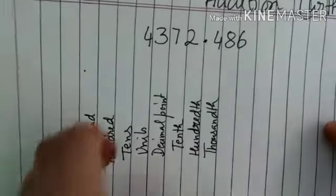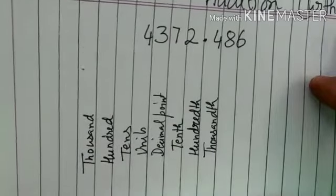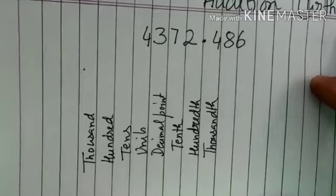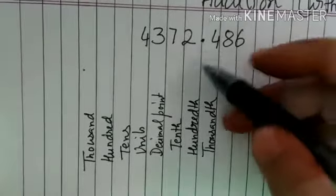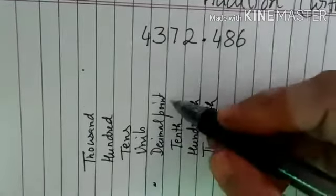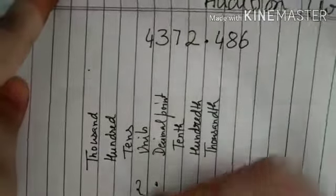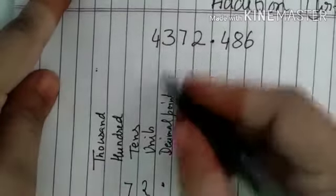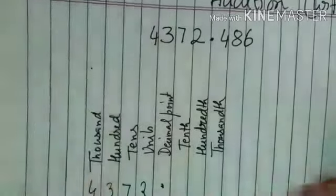Now how can we write according to place value? I think all of you know the place values we have learned in the Indian and international number systems. Here, decimal comes under the decimal point. The numbers just before the decimal are whole numbers, so we write them according to their place value: 2 comes under units place, 7 under tens place, 3 under hundreds place, and 4 under thousands place.